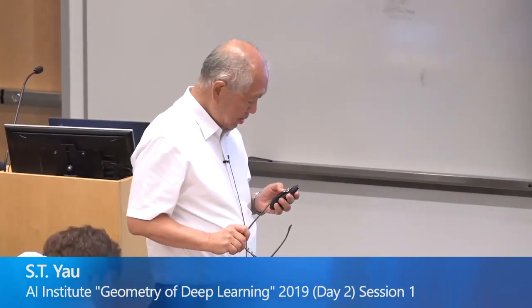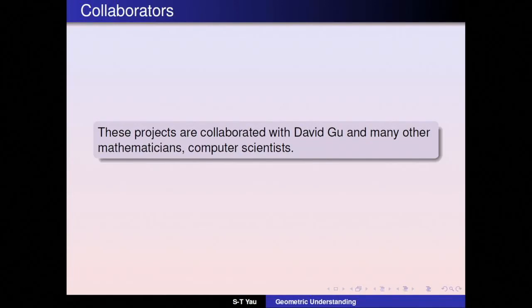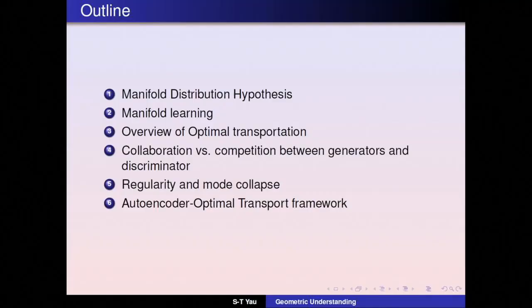Thank you, Grant. I'm not an expert in this field, but I'd like to talk about it. These are works by a team of David Gu and many other people related to mathematics and computer science, largely related to non-linear theory with optimal transportation and all that. So here's geometry, which I have been working on for a long time. I'm not sure about deep learning because I don't know much about learning — and neither is it deep or maybe superficial. So here is the outline of the talk: manifold distribution hypothesis, manifold learning, optimal transportation, and several other things related to this, including an attempt to make some explanation of mode collapse.